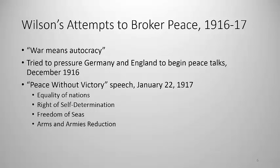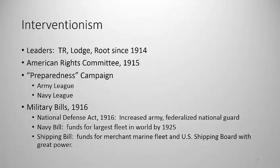On January 22, 1917, Wilson delivered his peace without victory speech to Congress, calling for equality of all nations, the rights of subject peoples to self-determination, freedom of the seas, and reduction of the huge armies and arms caches that had built up in the early 1900s. Meanwhile, the interventionist wing of the Republicans, led by Theodore Roosevelt, Elihu Root, and Henry Cabot Lodge since 1914, wanted the U.S. to enter the war on the side of Great Britain. They had initiated a preparedness campaign beginning in 1914, pushed primarily by Theodore Roosevelt, William Howard Taft, the Army League, the Navy League, and the American Rights Committee.